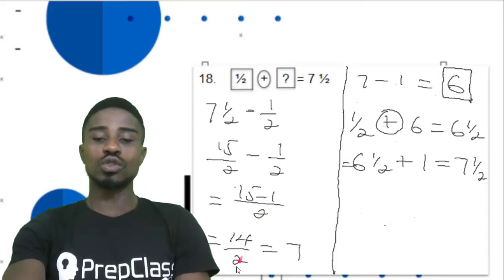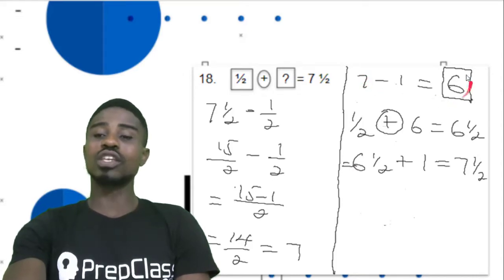So 14 over 2, 2 here, 1. 14 divided by 2 would give us equal to 7. So 7 minus 1 would give us equal to 6. Our answer that ought to be here should be 6.